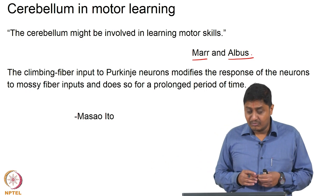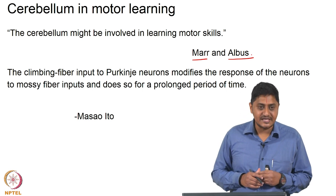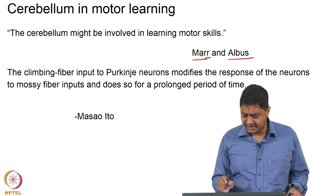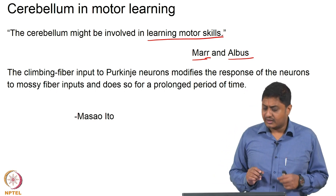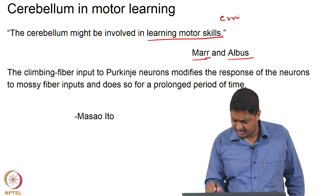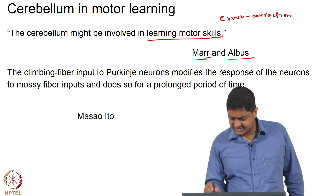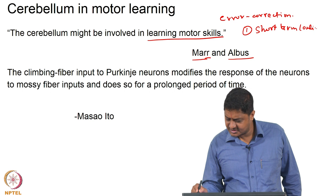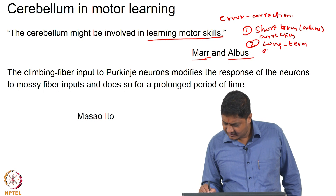This gave rise to a large body of work involving modeling of cerebellar function, starting with the seminal contributions of Marr and Albus, where they claimed that motor learning is mediated by the cerebellum — or at least error-based motor learning. There are multiple roles for the cerebellum. One is short-term or online error correction, where an error is corrected as soon as it occurs. The other is long-term error correction, also called motor learning.